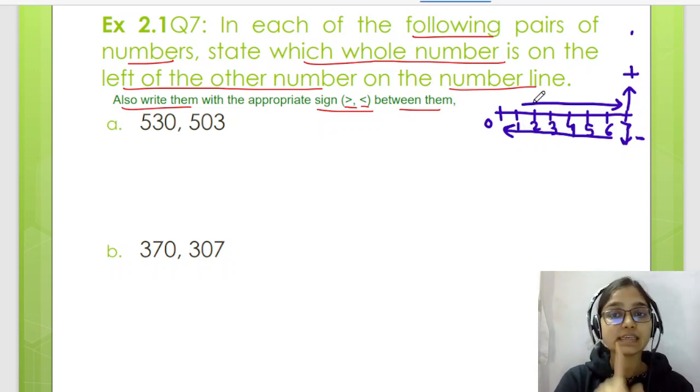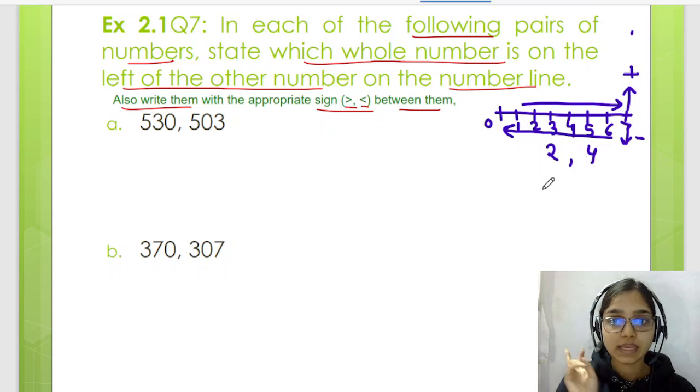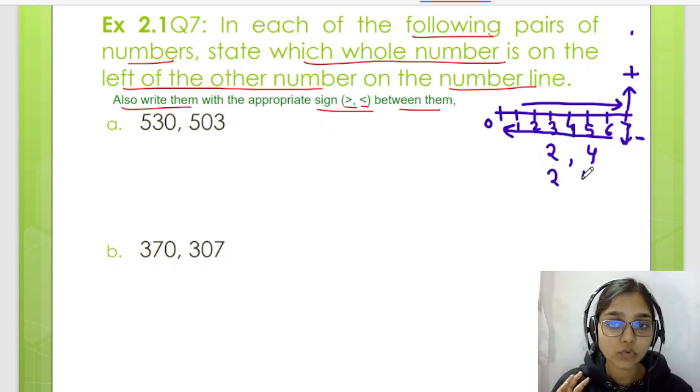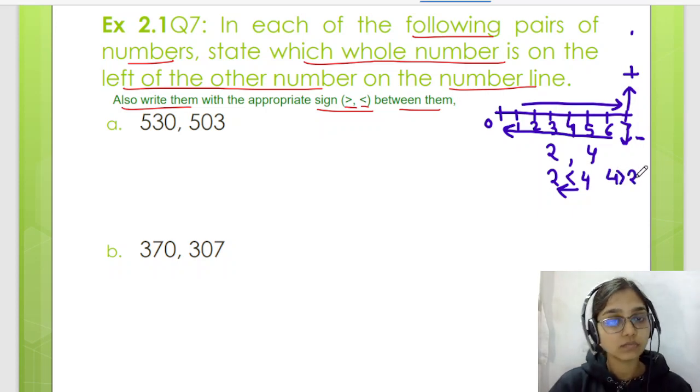If we move left, the number value is reduced. Now let's compare the numbers. For an example, 2 and 4. Which will be left on the number line? 2 will be to the left, right? And 2 is less than 4, or 4 is greater than 2. You can say both. That's the thing that we have to do in this question.